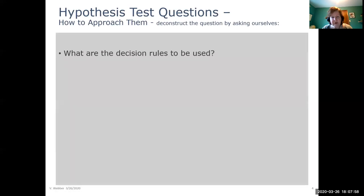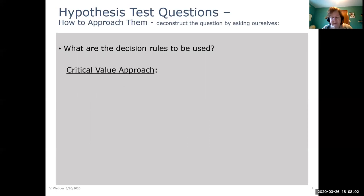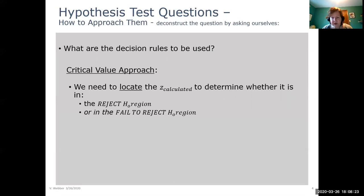We would then look into what decision rules are we going to be using. And for our course, we're going to be using our two approaches. Critical value approach, which is the more classical or old school type approach if you prefer. And what we do with that is that we compare or we locate the z calculated to the z critical. And we figure out what the z calculated is. Is it in the reject H0 region? Or is it in the fail to reject H0 region?